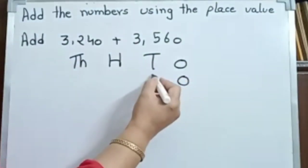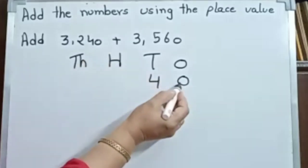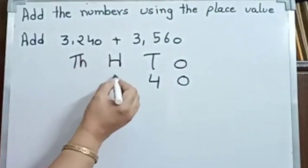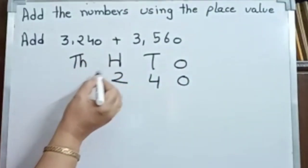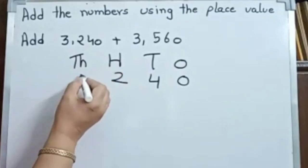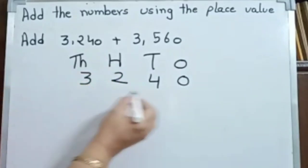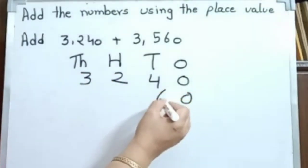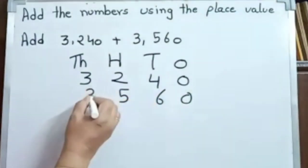Four in the ones place, zero in the ones place, four in the tens place, two in the hundreds place. And here: 0, 6, 5, 3.